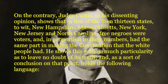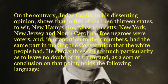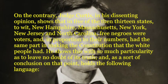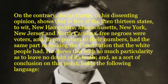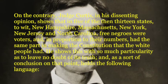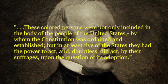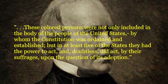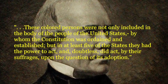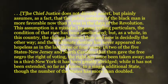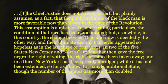Lincoln continues, citing Judge Curtis's dissenting opinion: 'In five of the then 13 states — New Hampshire, Massachusetts, New York, New Jersey, and North Carolina — free Negroes were voters, and in proportion to their numbers, had the same part in making the Constitution that the white people had.' Curtis holds that 'these colored persons were not only included in the body of the people of the United States by whom the Constitution was ordained and established, but in at least five of the states they had the power to act, and doubtless did act, by their suffrages upon the question of its adoption.' Chief Justice Taney assumes that the public estimate of the Black man is more favorable now than in the days of the Revolution — but Lincoln calls this assumption a mistake.